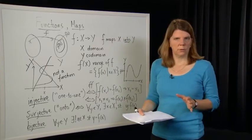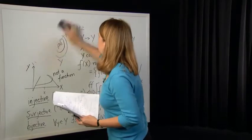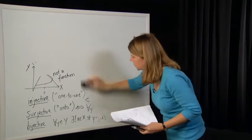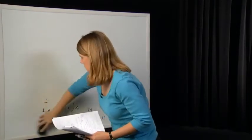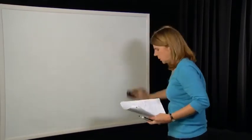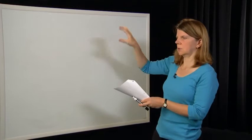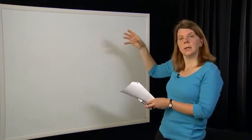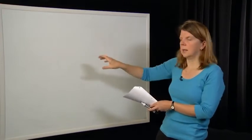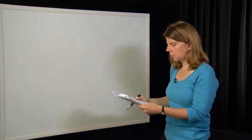We'll conclude this module with a simple but interesting example that shows what you can do with these definitions of injectivity and surjectivity. Let's think about inverses of functions. Intuitively, if we have a function that takes elements from X into Y, then the inverse of that map goes in the opposite direction — it takes elements from Y and maps them back to X, doing the reverse of what the function does.